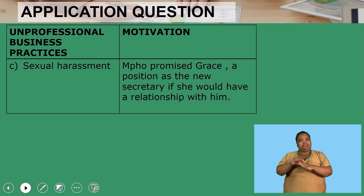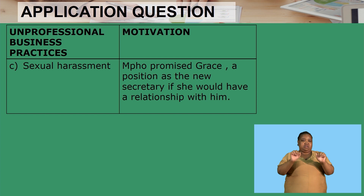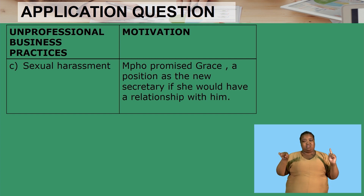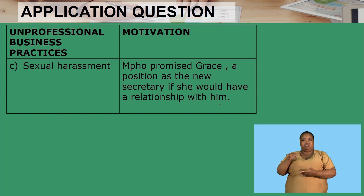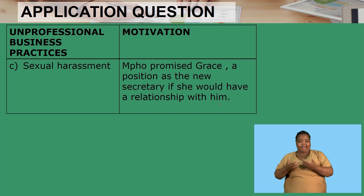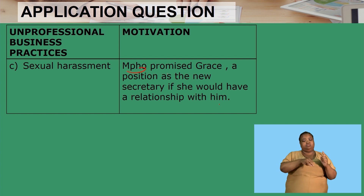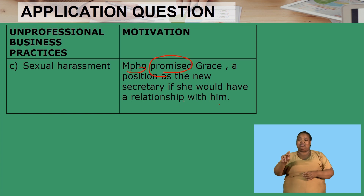The first unprofessional business practice is sexual harassment. From the scenario: MPaw promised Grace a position as the new secretary if she would have a relationship with him. There is a promise made — only if you have a relationship with me will I give you a position. If not, forget about the new position. That is unprofessional.